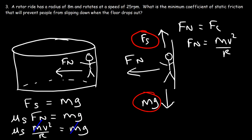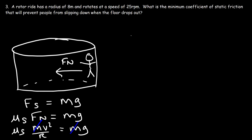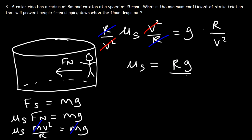We can cancel m, so mu_s is independent of mass. We get mu_s times v squared over r equals g. Multiplying both sides by r over v squared, the v squared and r cancel on the left, giving mu_s equals rg over v squared.